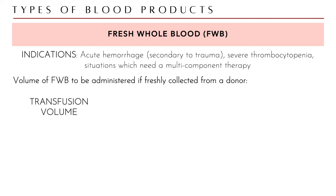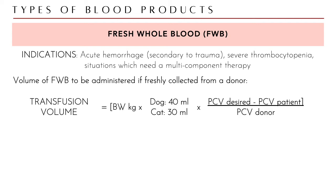To compute transfusion volume for fresh whole blood, take the recipient's body weight in kilograms and multiply by a species constant — 40 ml for dogs, 30 ml for cats — then multiply by: (desired PCV minus current patient PCV) divided by the donor's PCV. You give whole blood to elevate the patient's current packed cell volume.